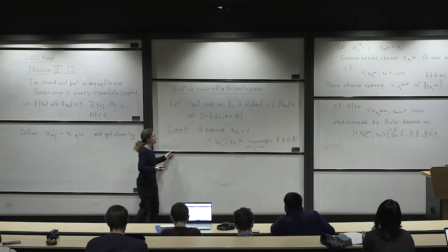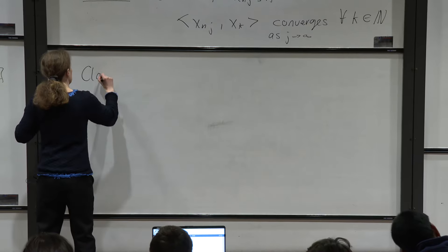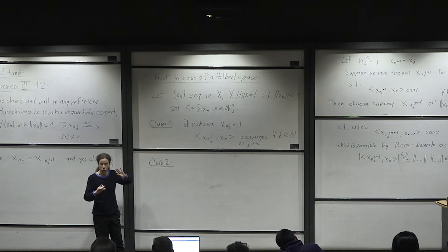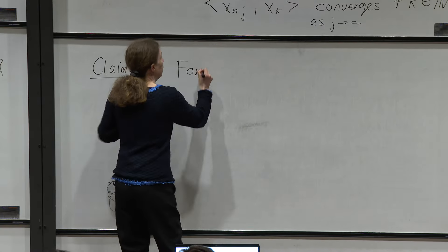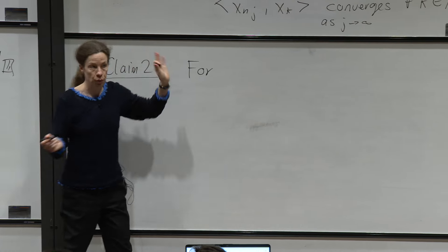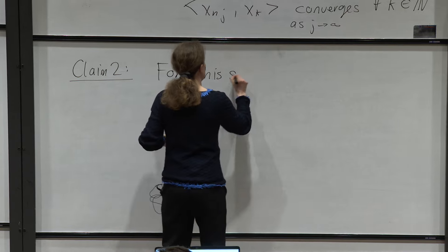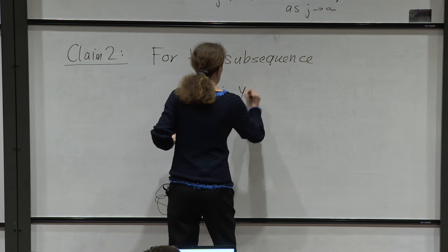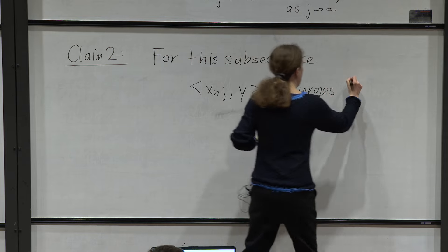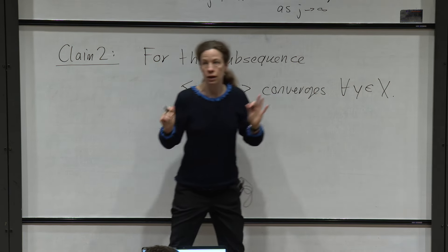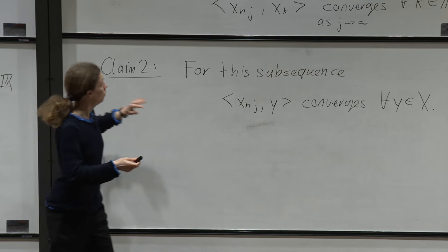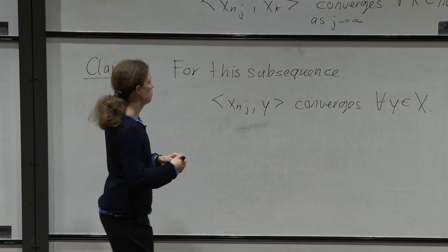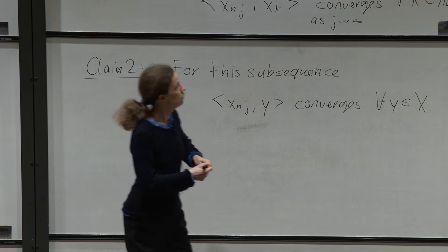Claim 2: for this particular subsequence, we don't need to pass to further subsequences. For this subsequence x_{n_j}, we have that ⟨x_{n_j}, y⟩ converges for every single y in X. We're not yet saying what it converges to — just that it converges as a sequence of numbers.